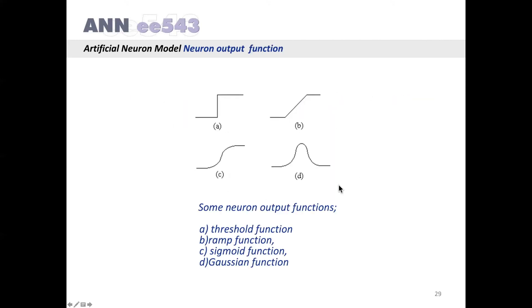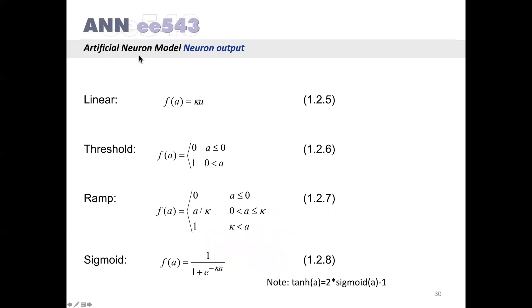These are some neuron output functions. This is the threshold function. This one is ramp function, sigmoid function, and Gaussian function. Usually in neural networks, the output function of neurons is preferred to be a monotonically increasing function. For example, sigmoid function, threshold function, and ramp function are all monotonically increasing functions. And this is a special case. Here we have Gaussian function which is used in the radial basis function networks. These are the mathematical representations of these output functions.